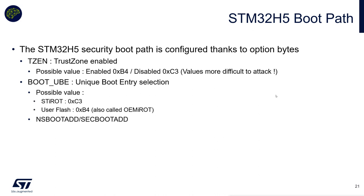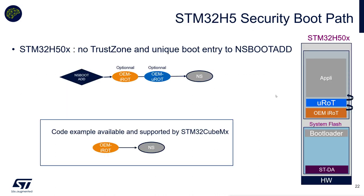Regarding H5 boot path configuration, it's mainly done via Option Bytes: TrustZone enabled or not, boot UBU for unique boot entry, and Option Bytes for non-secure and secure boot addresses. For the H5-0X variant with no TrustZone, there's a unique boot entry to NS boot address via Option Byte. We have code examples of a one-stage bootloader — OMI-ROT. A two-stage bootloader is hypothetical here because the flash size is too small. The example, based on MCU-Boot and named OMI-ROT, just launches an application on this product.